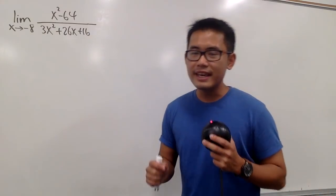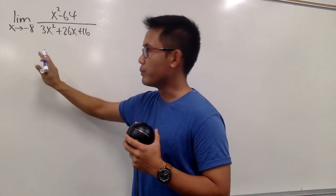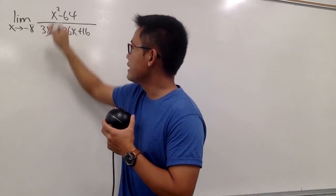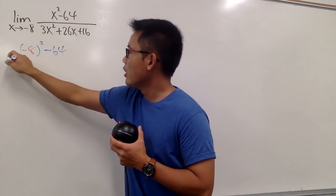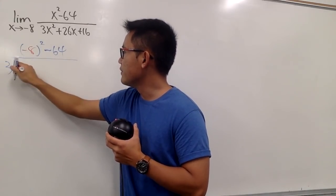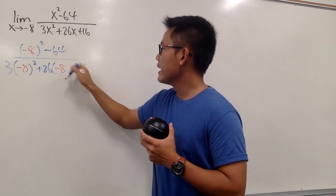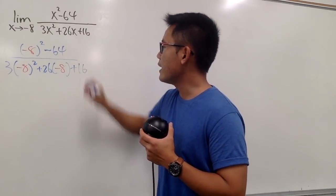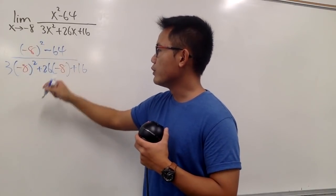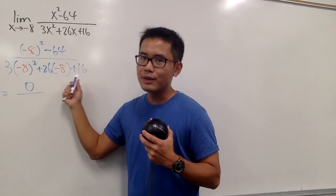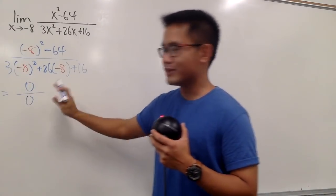Next, let's take a look at this limit. We're going to plug in negative 8 into all the x's first. Negative 8 squared is positive 64, minus 64 gives 0 on the top. If you work out the denominator, you'll also get 0. So we have 0 over 0.